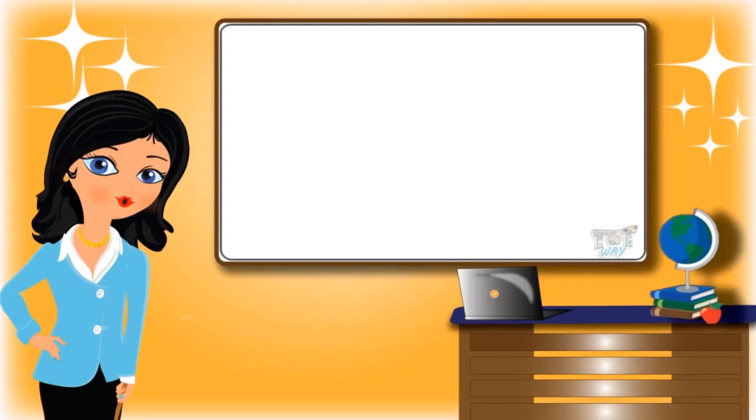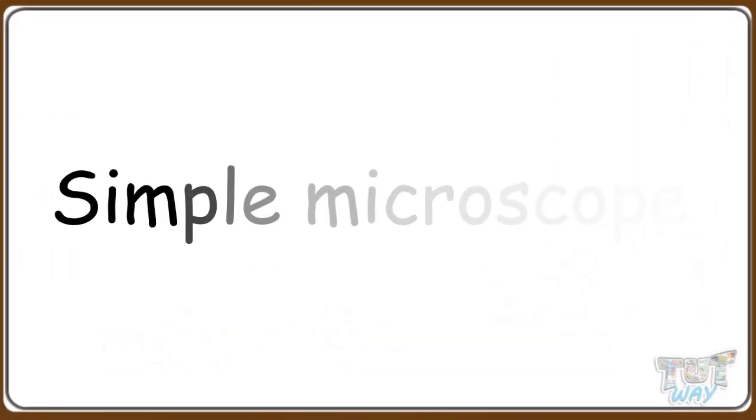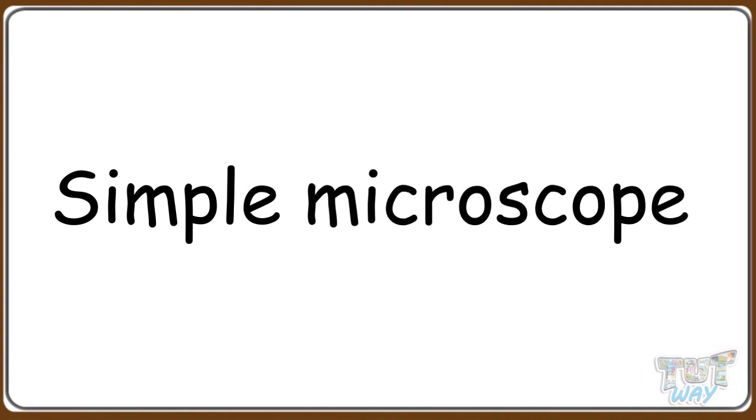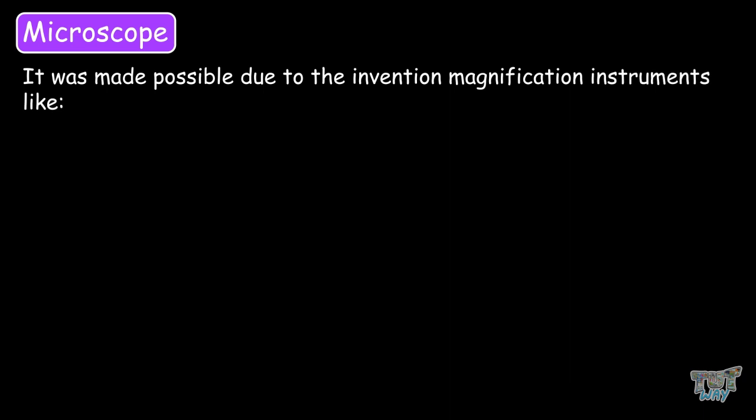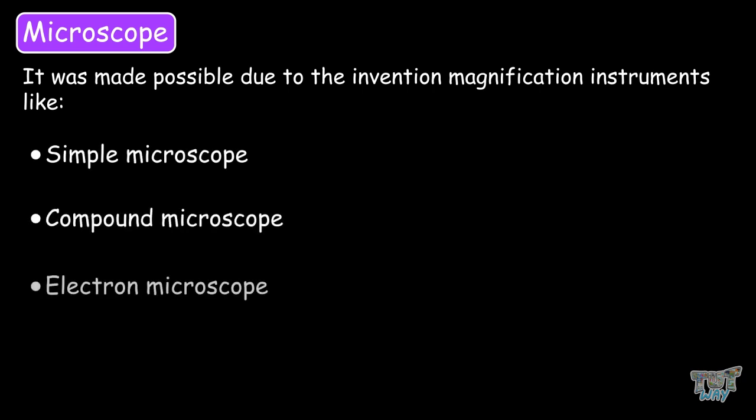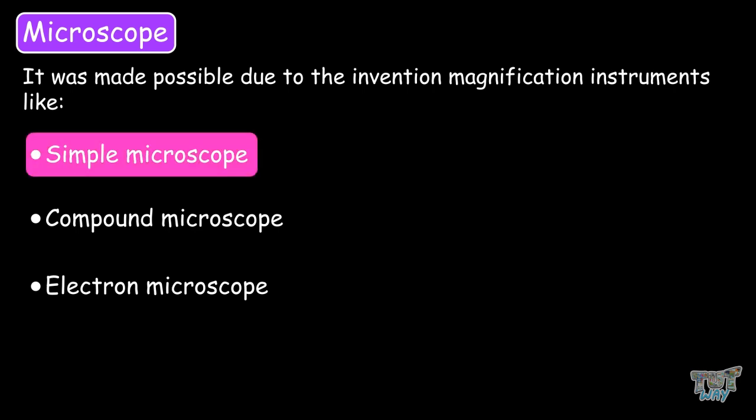Hi friends! Today we will learn about the simple microscope. So let's start. How were all the studies on cells made possible? It was all made possible due to the invention of magnification instruments like the simple microscope, compound microscope, and electron microscope. But the first one to be invented was the simple microscope, and we will learn about it today.